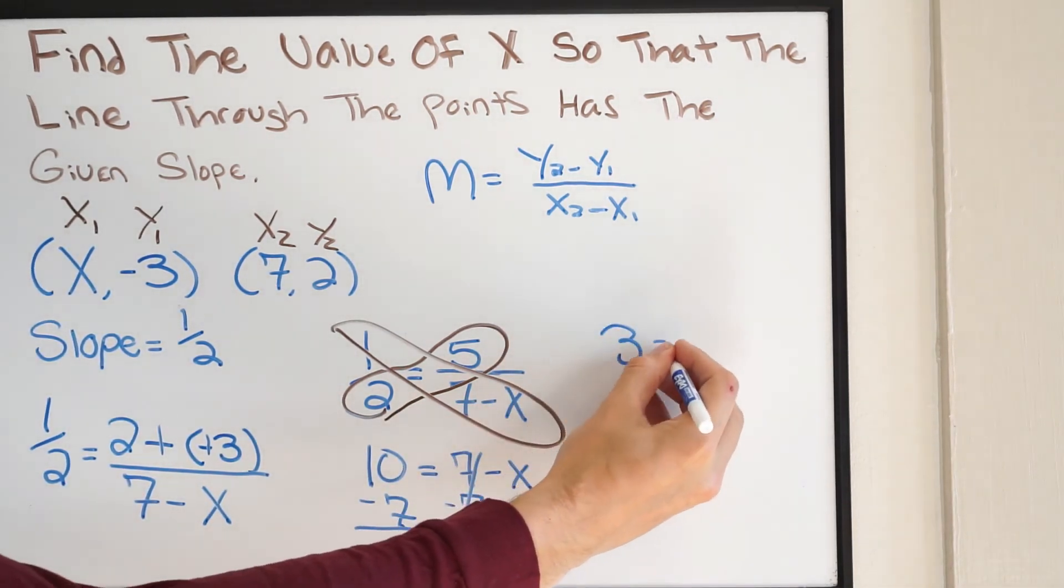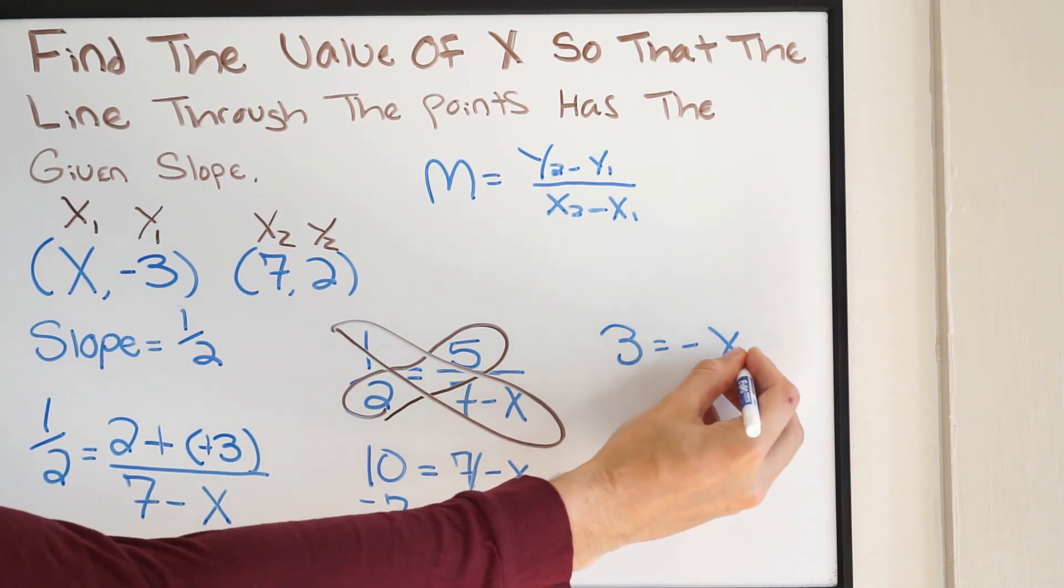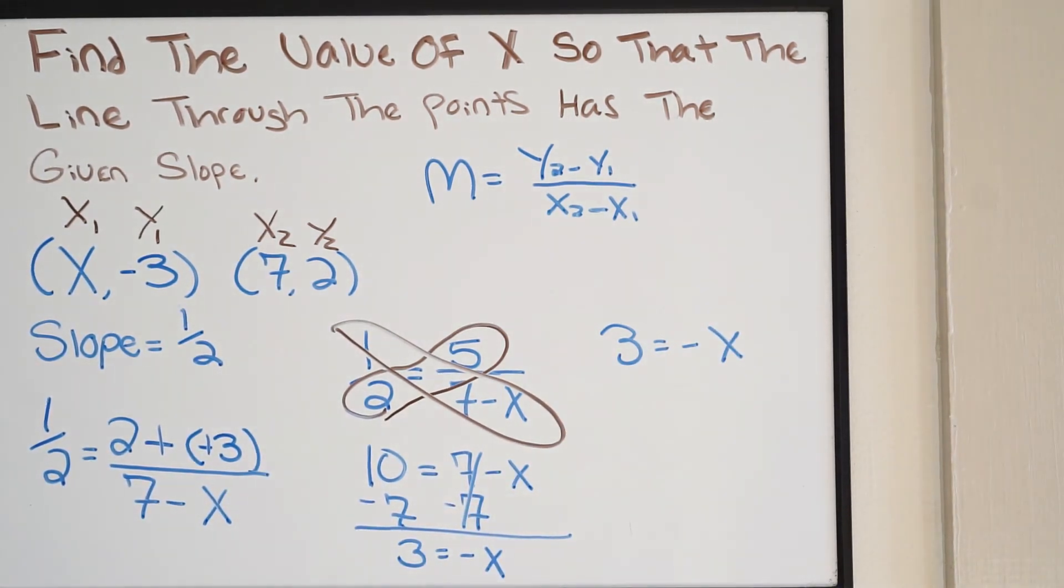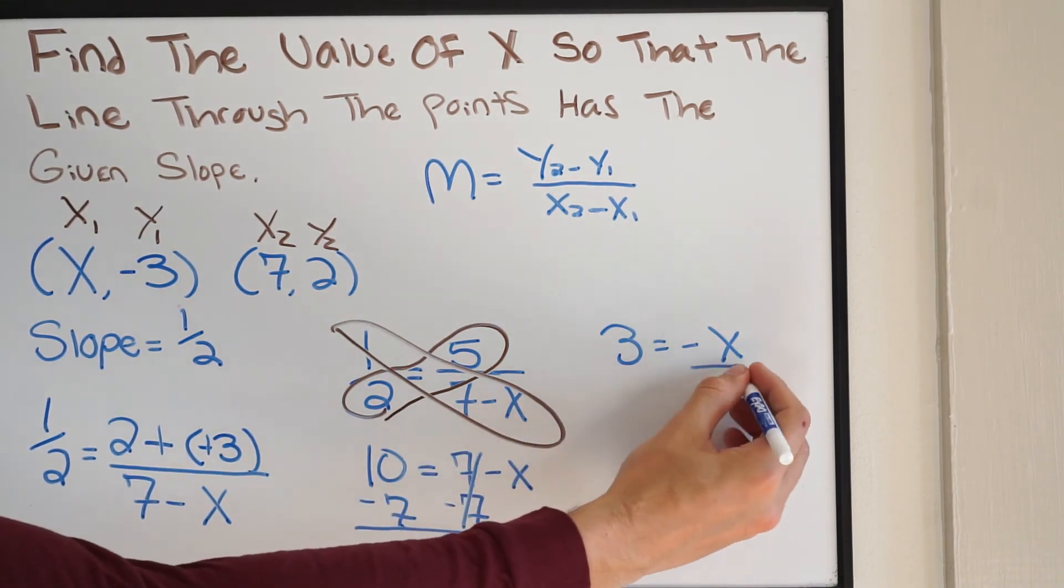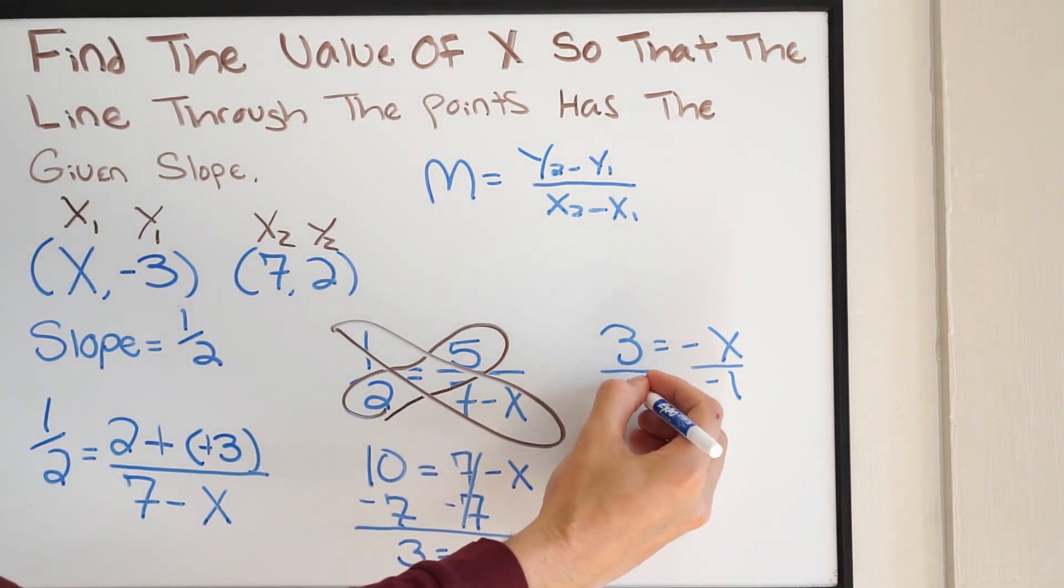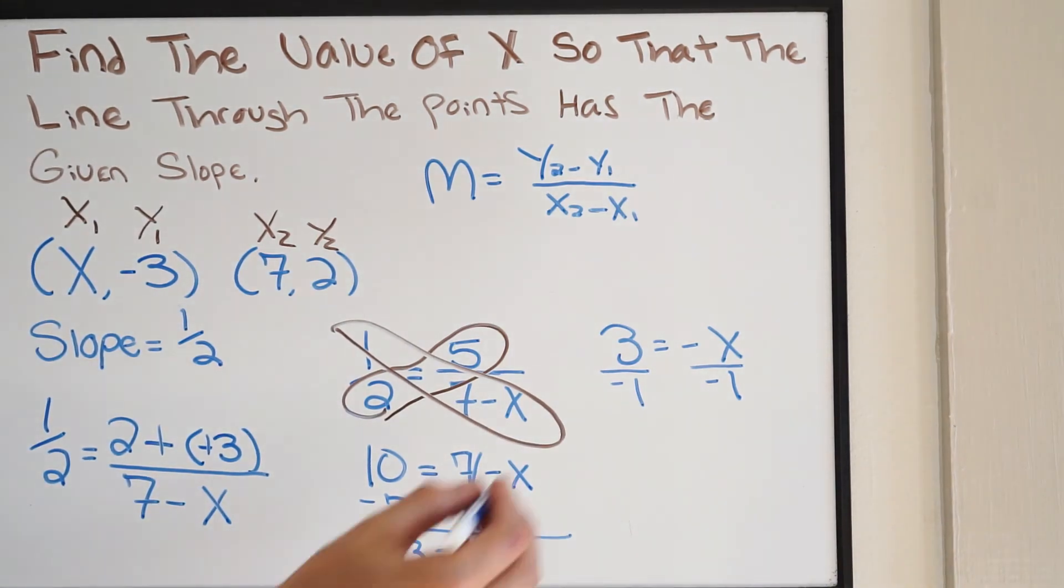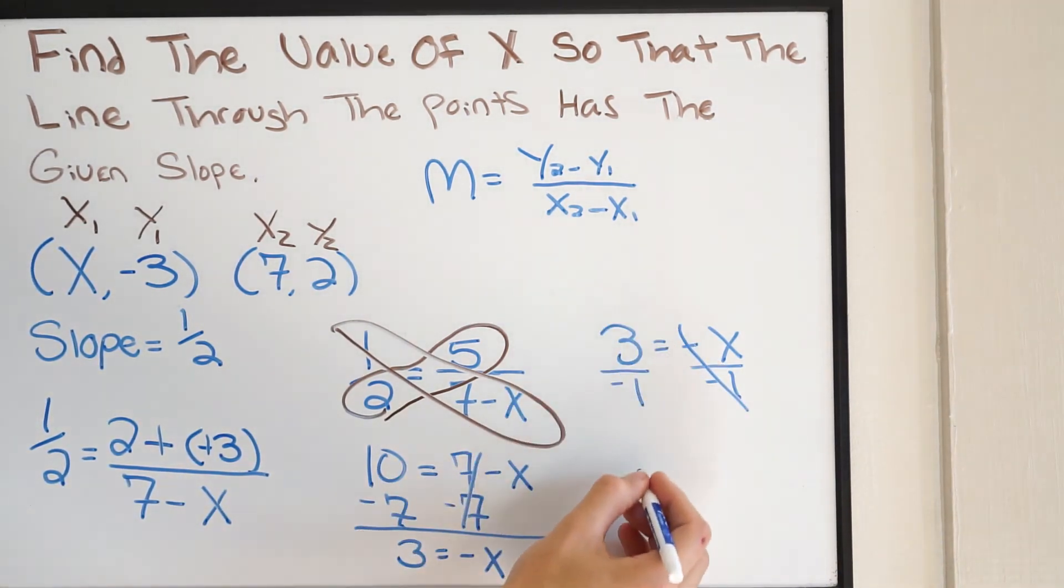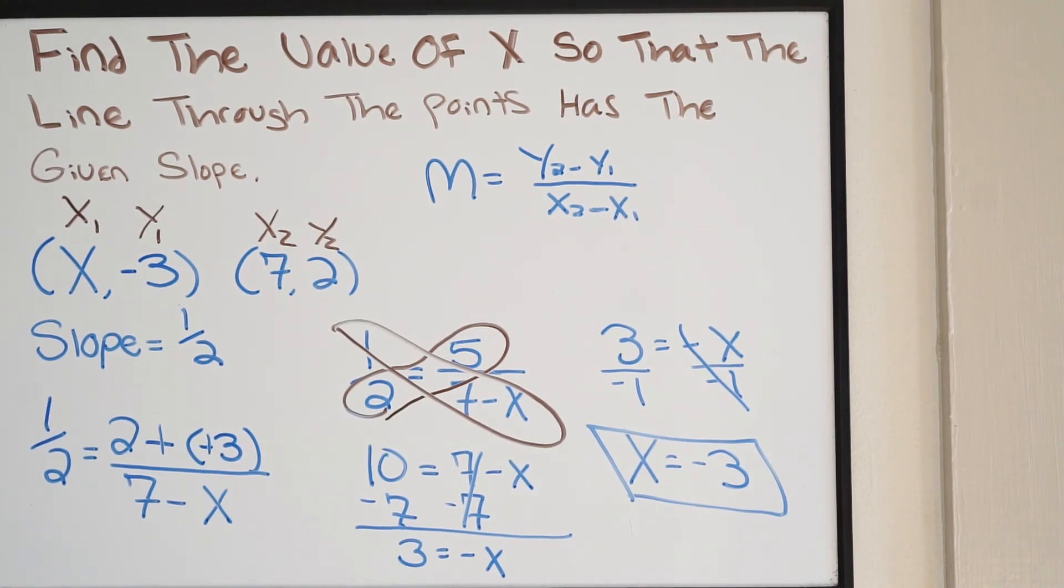Our last step, we want to get rid of that negative. So we need to divide both sides by negative 1. So we can see here our final answer is going to be x equals negative 3. And that is going to be our final answer.